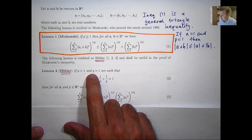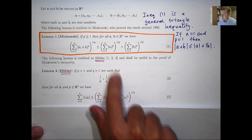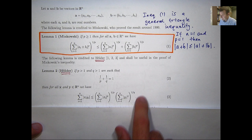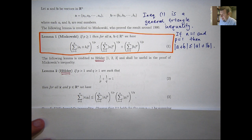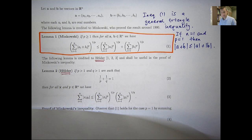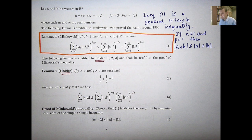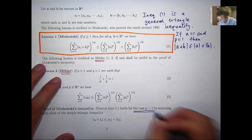So suppose P and Q are numbers both strictly greater than 1 and they're linked via this equation. Then for all vectors x and y, we have the following inequality. This inequality here, inequality 3, is known as Holder's inequality. So let's see how we prove inequality 1, and essentially there are two cases to consider.